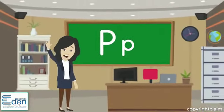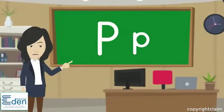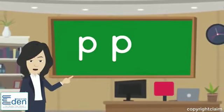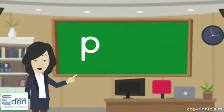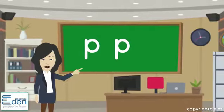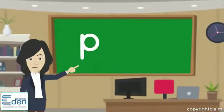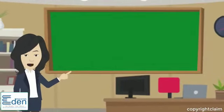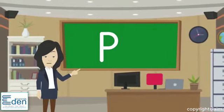Assalamu alaykum friends, how are you? Meet with me, I am P and my sound is p p p. Say it as p p p. Now say with me p p p p. I am capital P and I am small p.